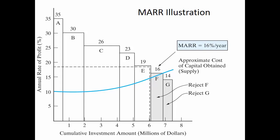Using that decision criteria, should they do Project B? Yes — rate of return is bigger than the borrowing costs. Should they do Project C? Yes. But Project F is rejected. By the time we reach Project F, the borrowing costs are equal to the rate of return, so you'd have zero profit — you'd just be turning all profits over to the bank.